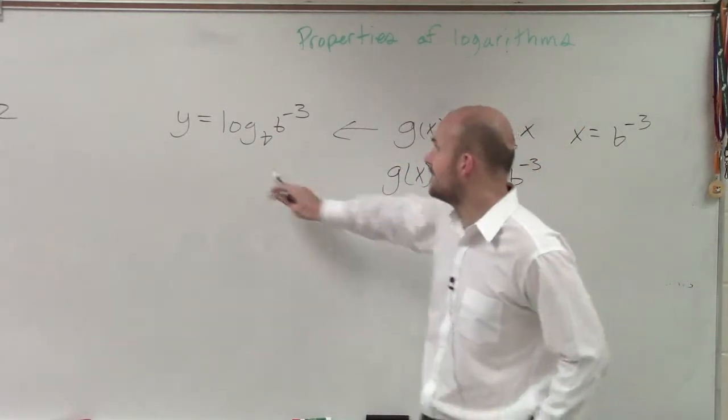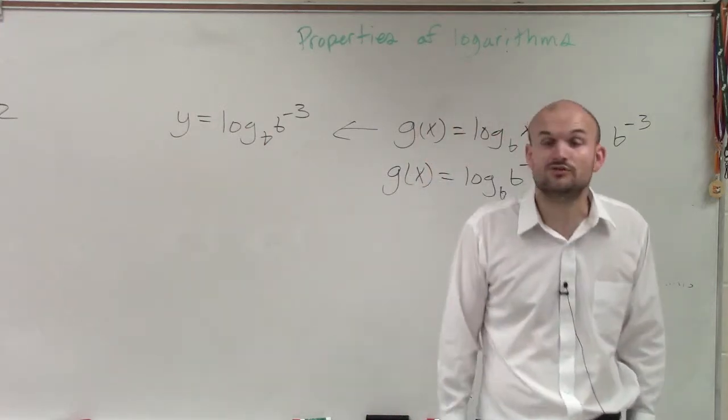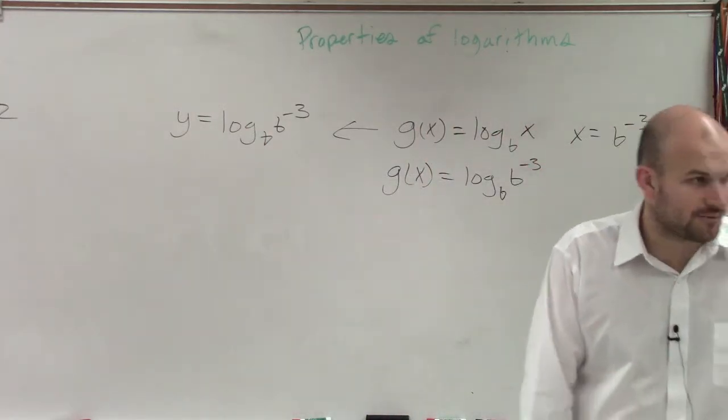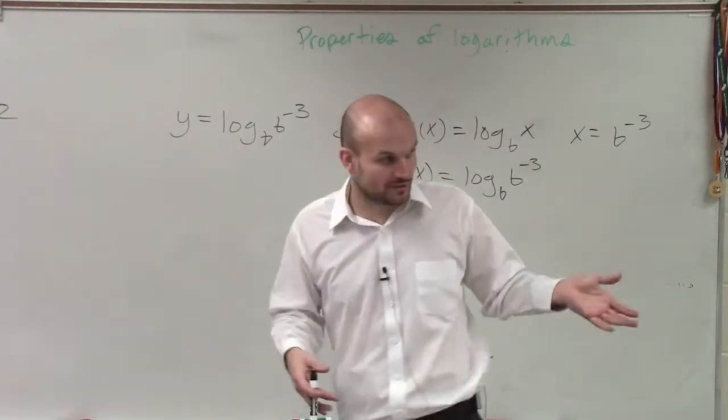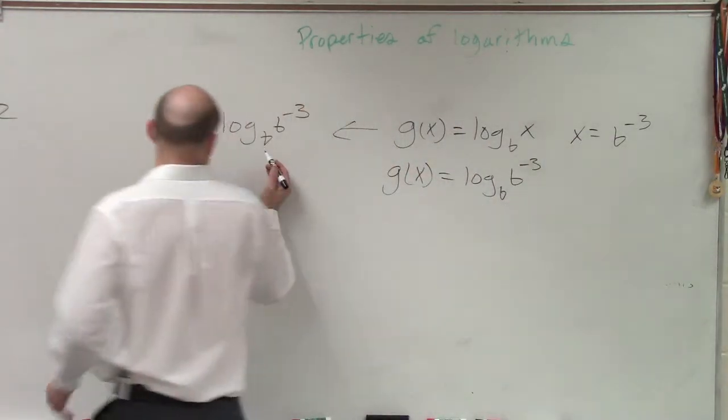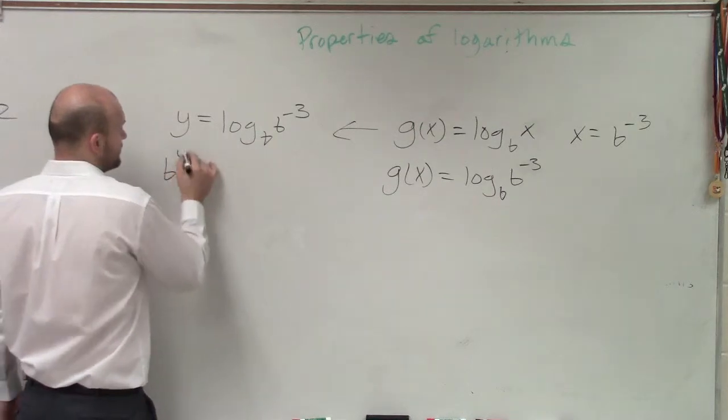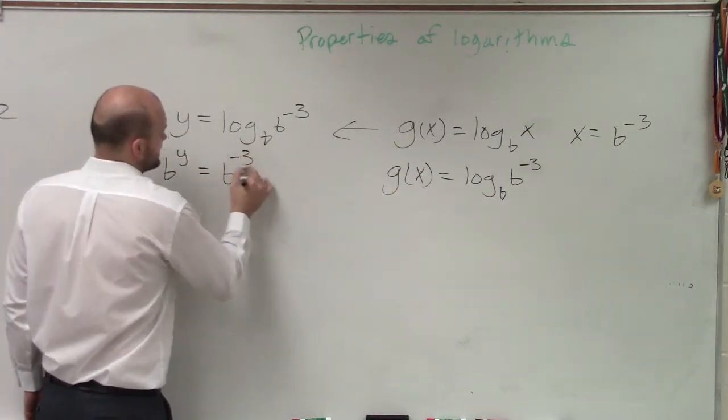So anyways, ladies and gentlemen, if I have an equation that looks like this, I can always convert it to exponential form, right? If I have a logarithmic equation, I can rewrite it as an exponential equation, right? So therefore, by converting this, I have b to the y equals b to the negative 3.